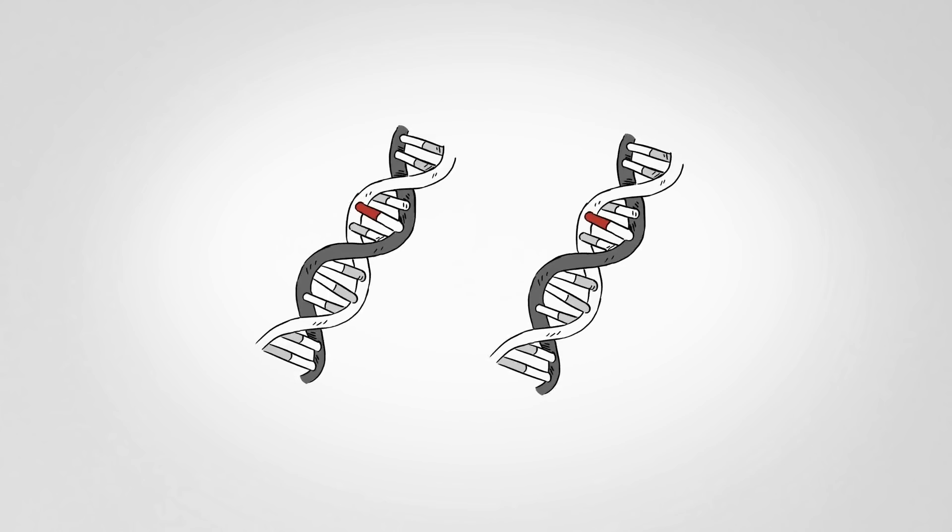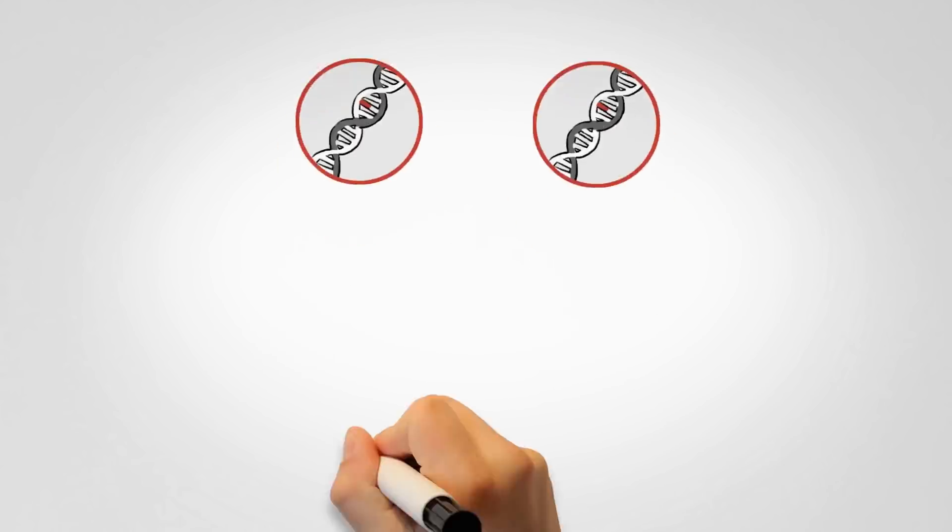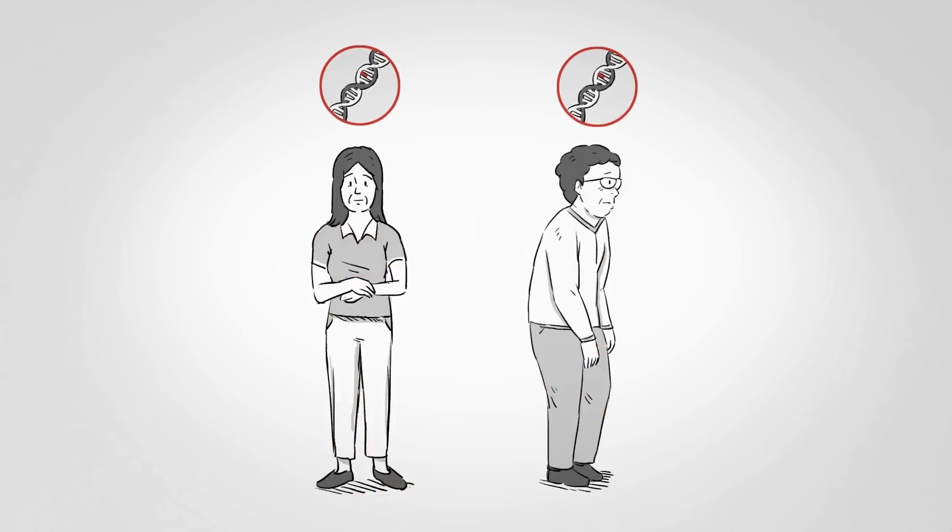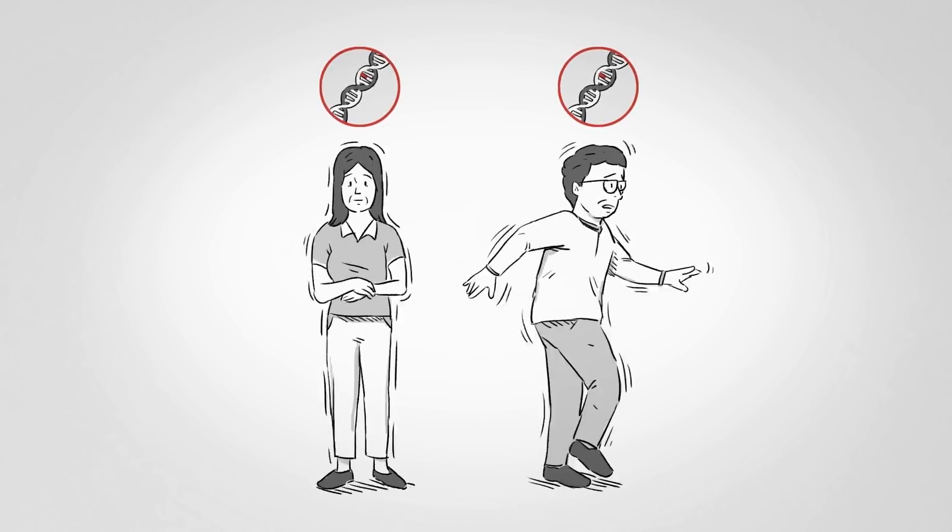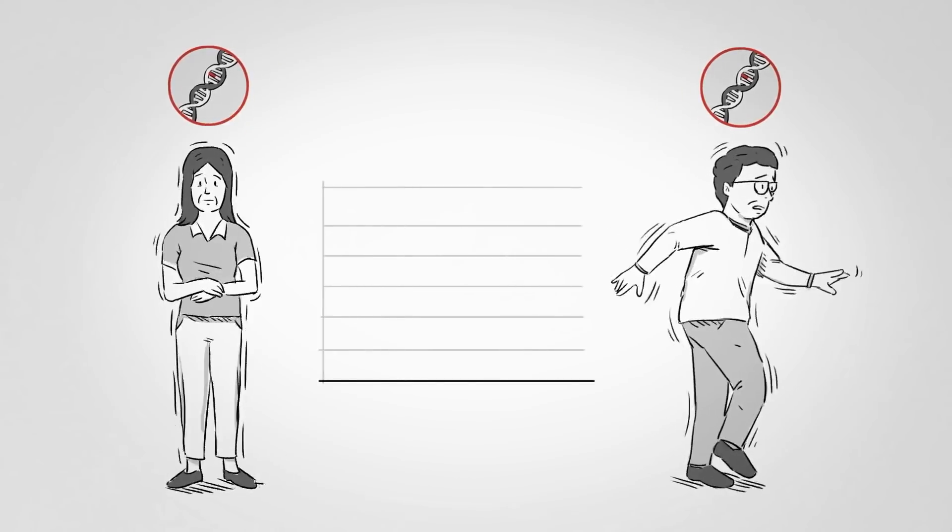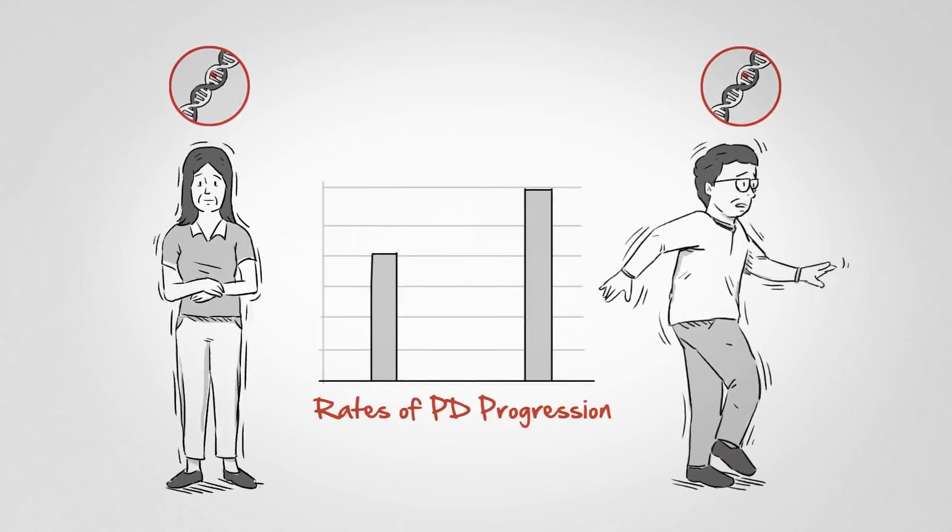And we can look for clues about the variability of Parkinson's disease. Perhaps there is a genetic aspect that makes one patient have more tremor, while another has mostly gait and balance issues or cause different people's disease to progress at different rates.